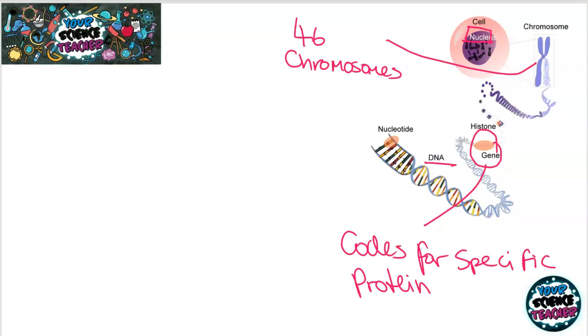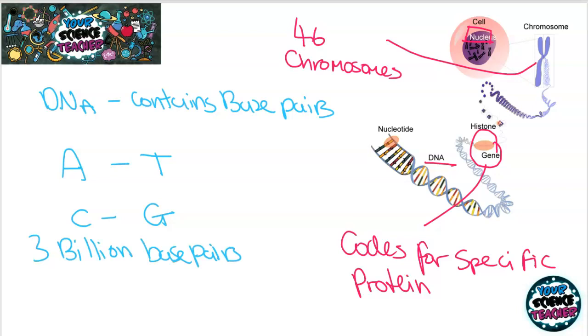If you zoom in on the DNA further, you'll notice that the DNA contains base pairs. And all you need to know for GCSEs is which base pairs match up. So A matches up to T and C matches up to G. In each cell, we have around 3 billion base pairs. And the entire genetic makeup is called the genome. This just basically means all of the base pairs in every single cell. And in total, there are 21,000 proteins that your body makes due to the human genome.